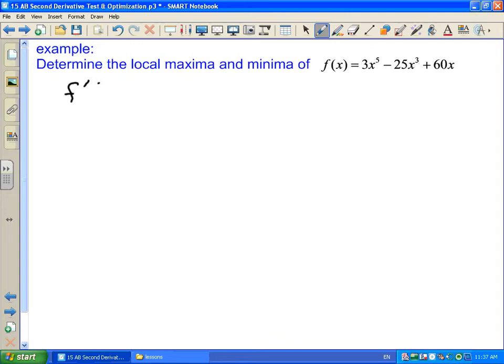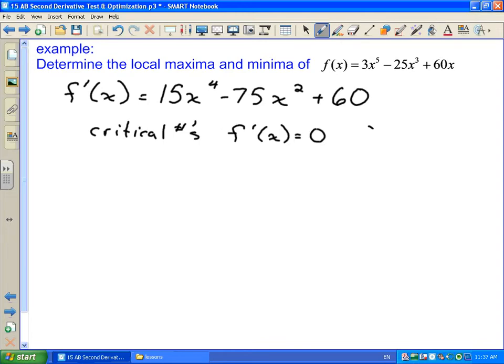We're going to take our derivative and set it equal to zero. So our derivative here is going to be 15x to the power of 4 minus 75x squared plus 60. And we're going to look for our critical numbers. Our critical numbers occur where f prime at x equals zero, and f prime at x does not exist.